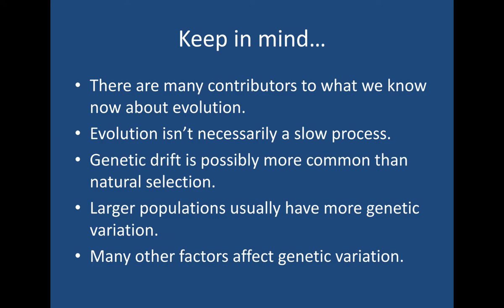Just keep in mind, there are many contributors to what we know now about evolution — it's not just Darwin or Wallace. Contrary to popular belief, evolution isn't necessarily a slow process; there's also the idea of punctuated equilibrium. A common misconception is that natural selection is the most common force in nature — genetic drift is possibly more common than natural selection. Larger populations usually have more genetic variation, and it's not just population size that affects genetic variation — many other factors also do, as we have discussed. That concludes this lesson. Hope you have a good day or night. Thank you.